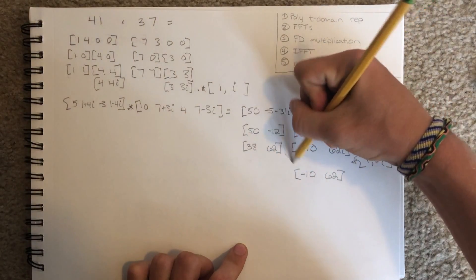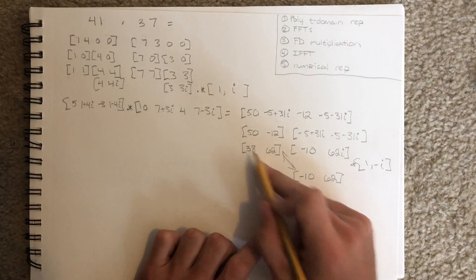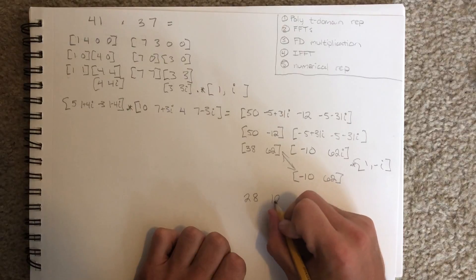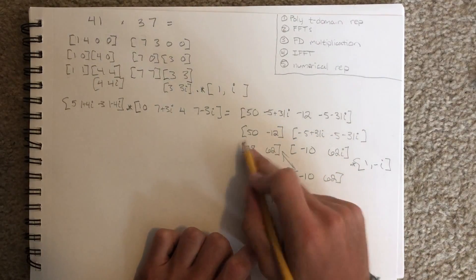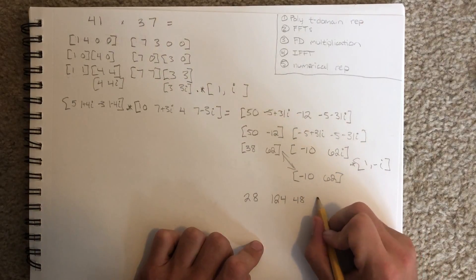And conjugate those two. 38 minus 10 is 28. 62 plus 62 is 124. 38 plus 10 is 48. 62 minus 62 is 0.